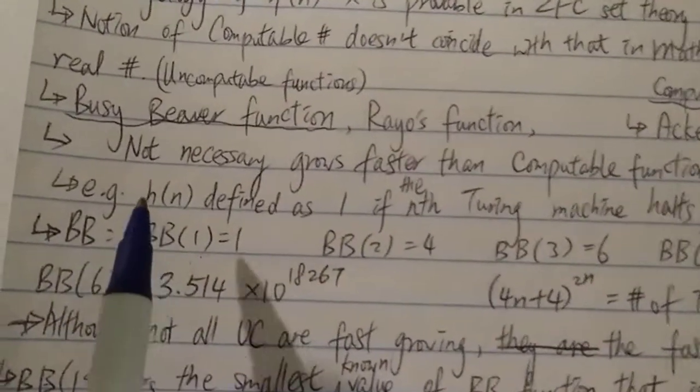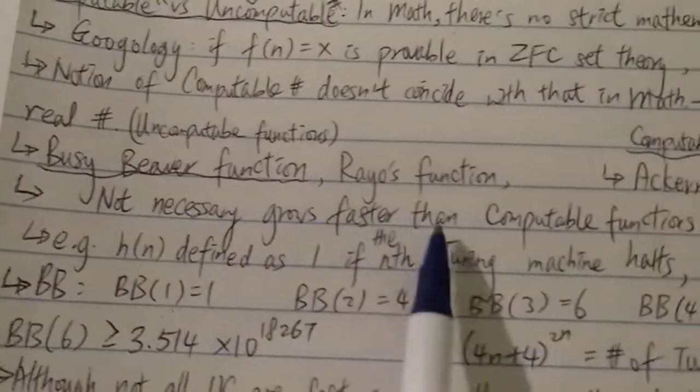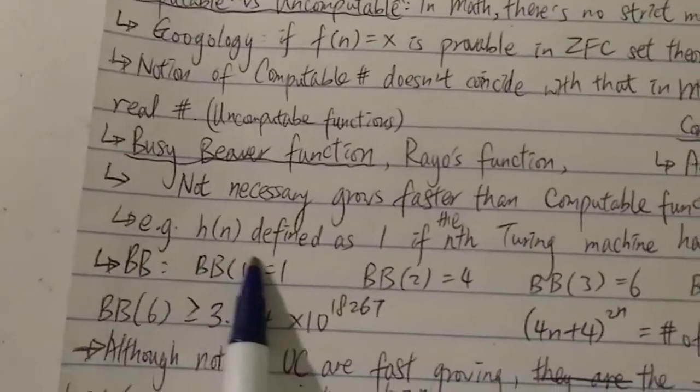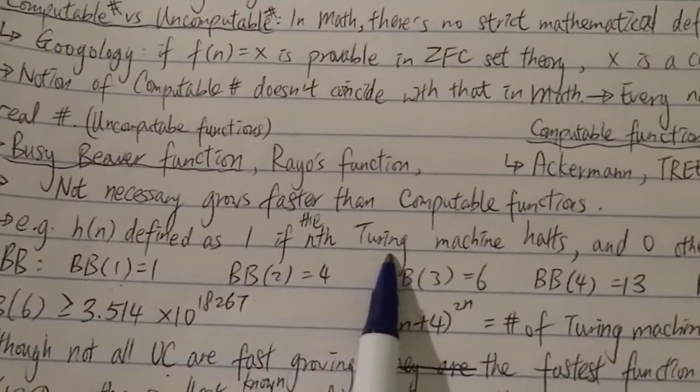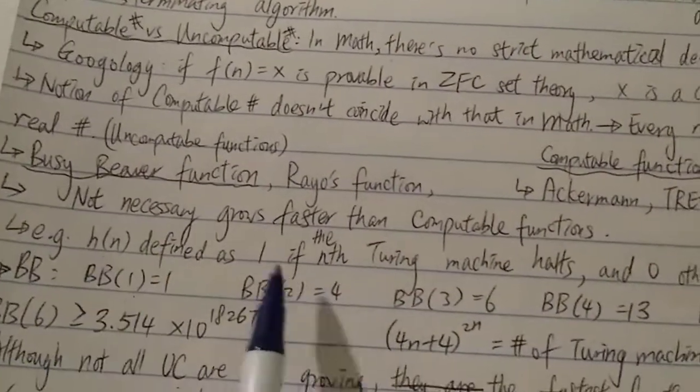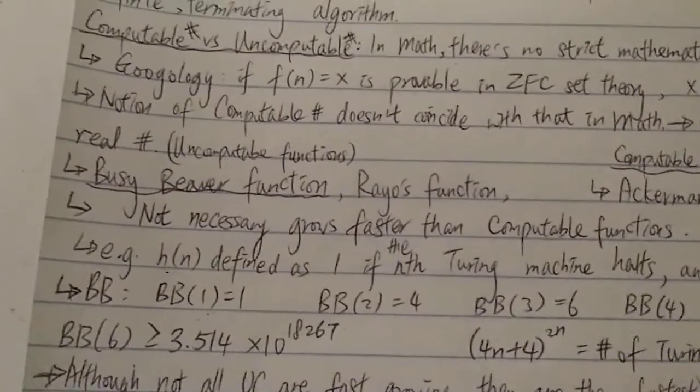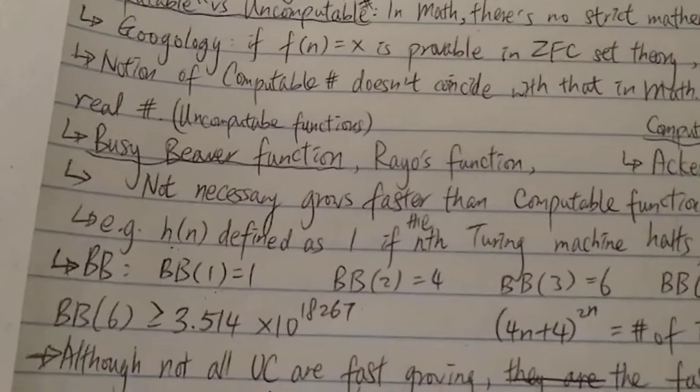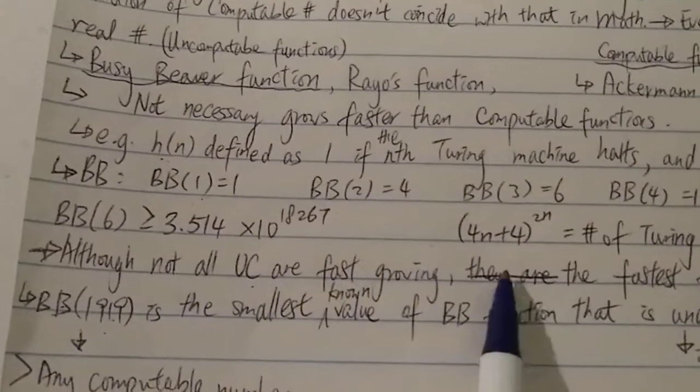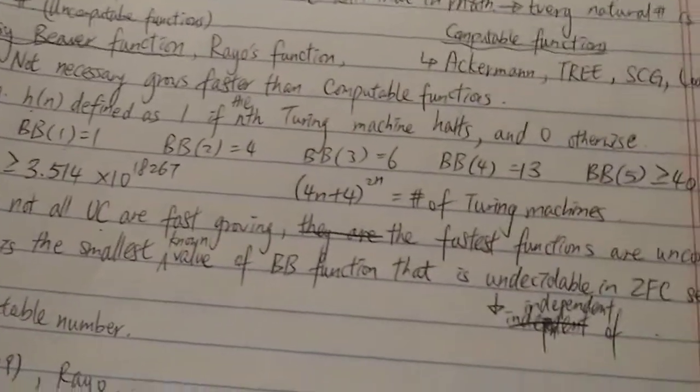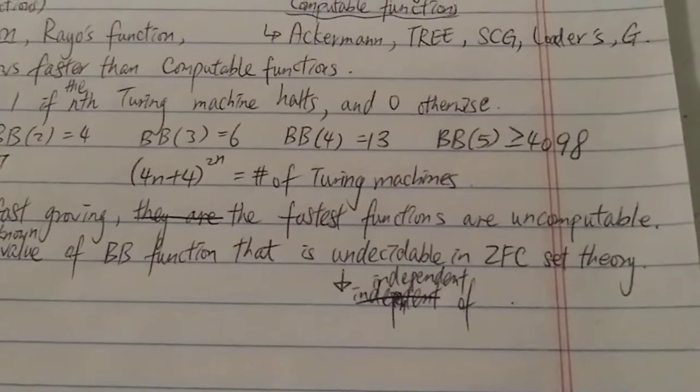Some misconceptions about uncomputable functions: not all uncomputable functions grow faster than computable functions. One good example would be this function, h(n), which is defined as 1 if the n-th Turing machine halts and 0 otherwise. The output of this function can only be 1 and 0. Even though this function is uncomputable, it can only have two outputs, so obviously this is not a fast-growing function. Although not all uncomputable functions are fast-growing, the fastest-growing functions ever known are all uncomputable.